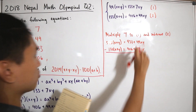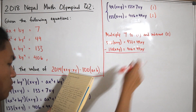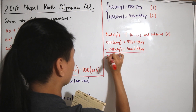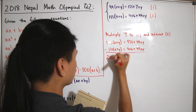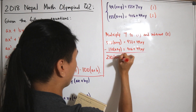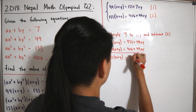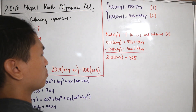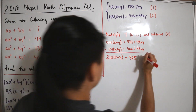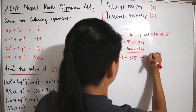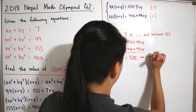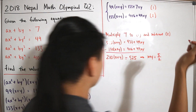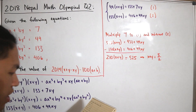Dividing both sides by 210, we get x + y = 525/210, which simplifies to x + y = 5/2.